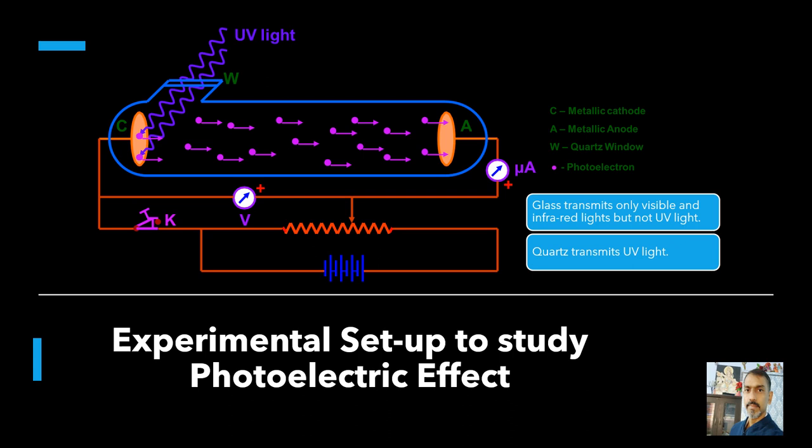The experimental arrangement consists of an evacuated glass or quartz tube having a photosensitive plate C and another metal plate. Monochromatic light from the source S of sufficiently short wavelength passes through the window W and falls on the photosensitive plate C, the emitter. A transparent quartz window is sealed onto the glass tube, which permits ultraviolet radiation to pass through and irradiate the photosensitive plate C. The electrons emitted by plate C are collected by plate A, the collector, by the electric field created by the battery. The battery maintains the potential difference between plates C and A, which can be varied. The polarity of plates C and A can be reversed by a commutator, so plate A can be maintained at a desired positive or negative potential with respect to emitter C. When the collector plate A is positive with respect to the emitter plate C, the electrons are attracted to it, causing flow of electric current in the circuit.